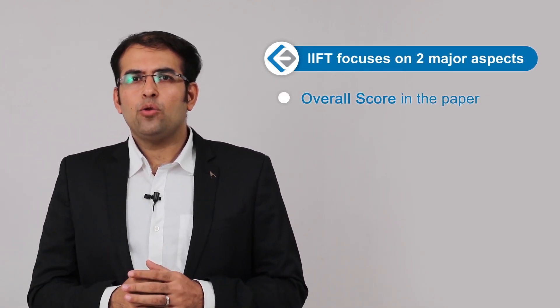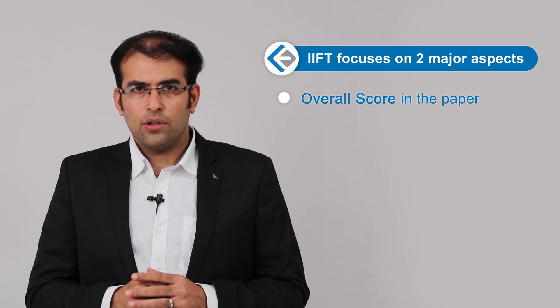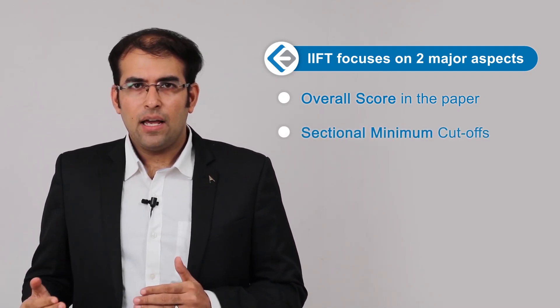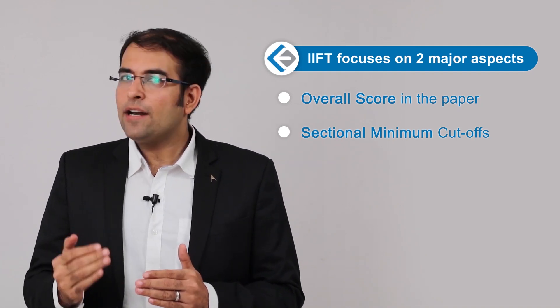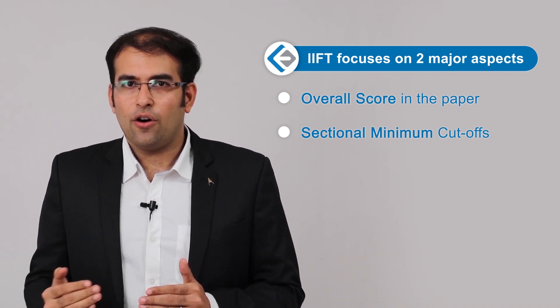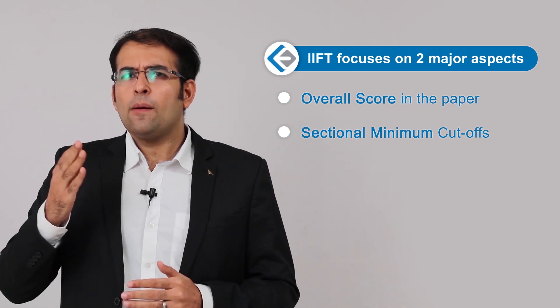Looking at the scoring trend over four to five years, all papers were out of 100. To get a call from IIFT for the second round of GD-PI, you need to understand that IIFT's scoring pattern has two major aspects: first, you have to achieve an overall score, and second, you have to meet a sectional minimum — not just a total overall sectional cutoff.